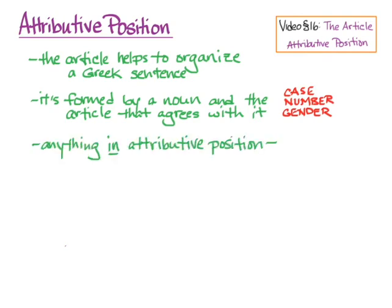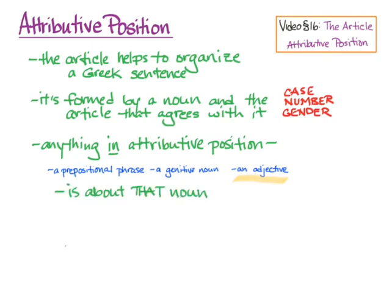Anything in attributive position — and there can be lots of different things in attributive position: a prepositional phrase, a genitive noun, and this is the reason why we're looking at this in this unit, when we get adjectives — anything in attributive position is about the noun that it is in attributive position to. Anything in attributive position is an attribute of the noun.